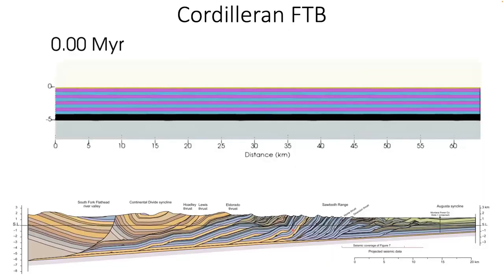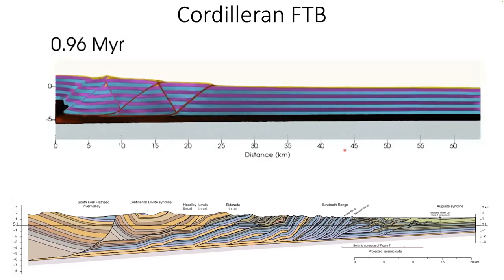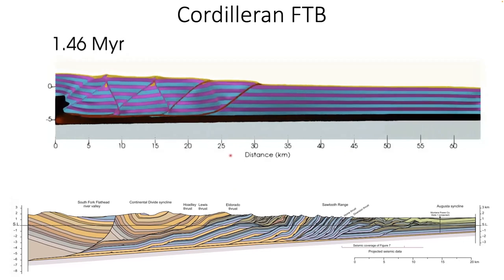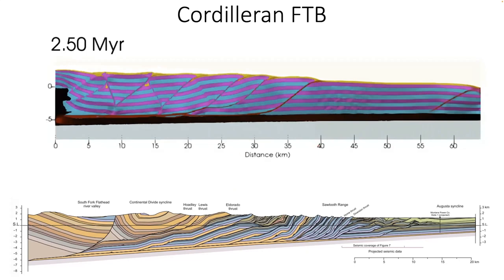The Cordilleran fold and thrust belt in Montana near the Canadian border is known for classic thin-skinned tectonics with no basement involvement, as shown in the cross-section. In this context, an elastic beam formulation at the base makes more sense, which is what is used in the model. Over that rigid base we get some flexure, but structural styles are not driven by changes in flexure.